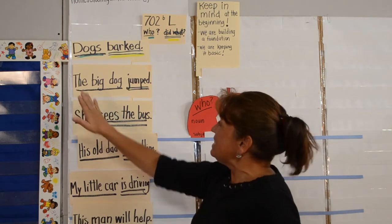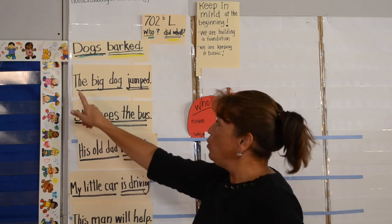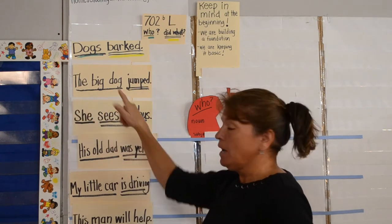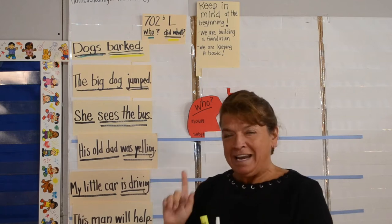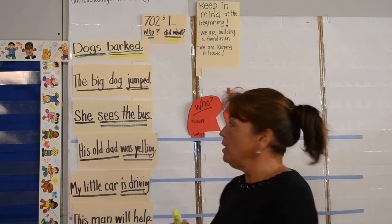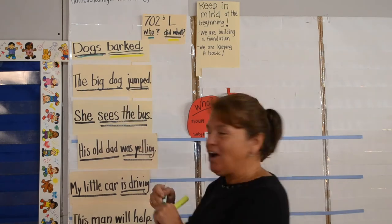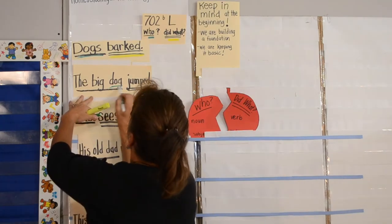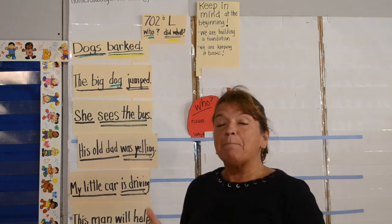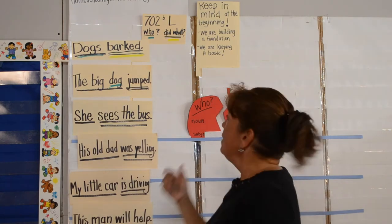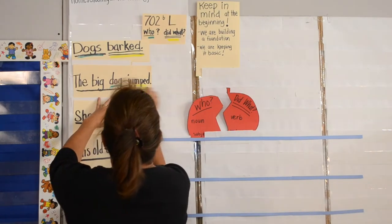The second sentence: The big dog jumped. We underline the complete who with one line — 'the big dog.' Now we're trying to find the one noun in the complete who, which is 'dog.' So we underline dog green. We're looking for the verb in the complete did what, and that verb is 'jumped,' so we underline jumped yellow.